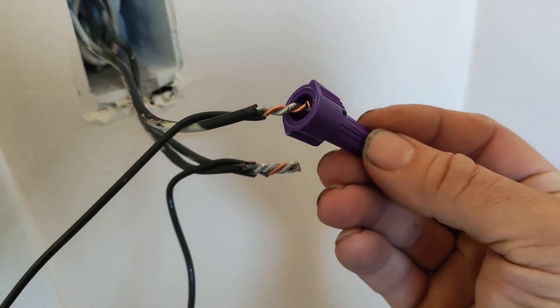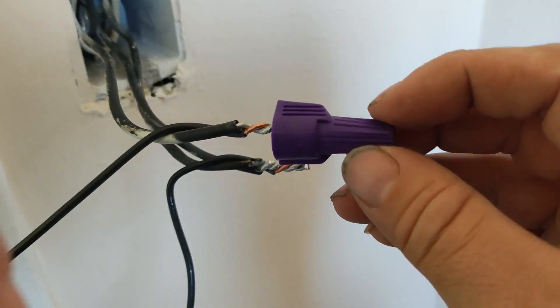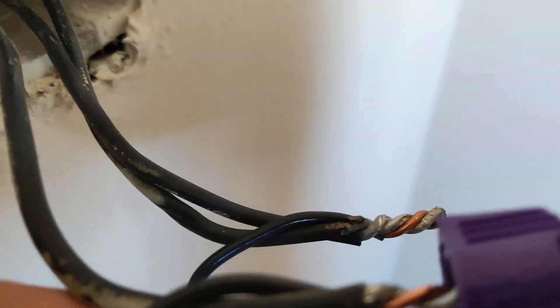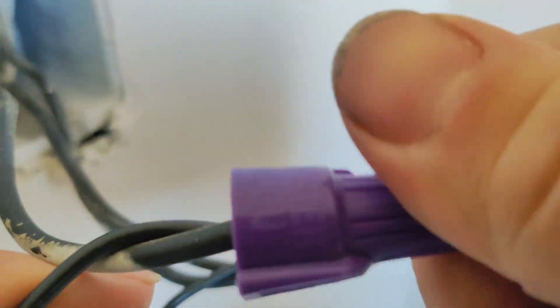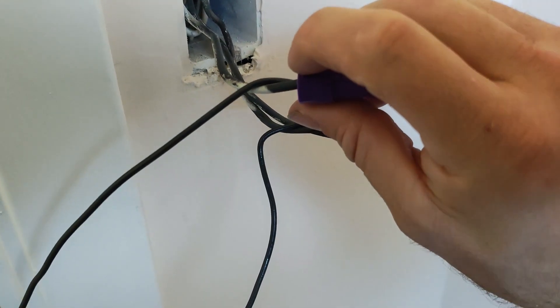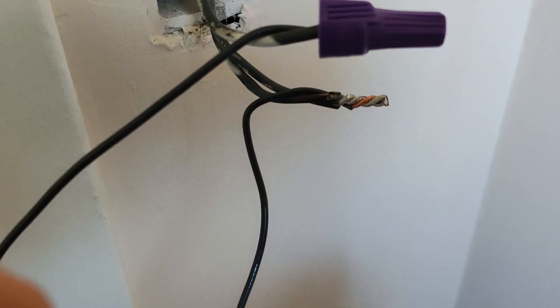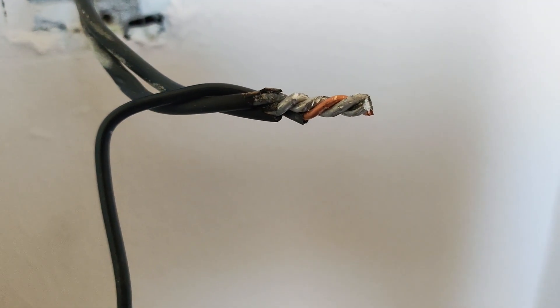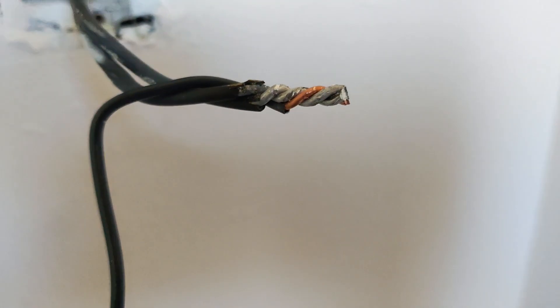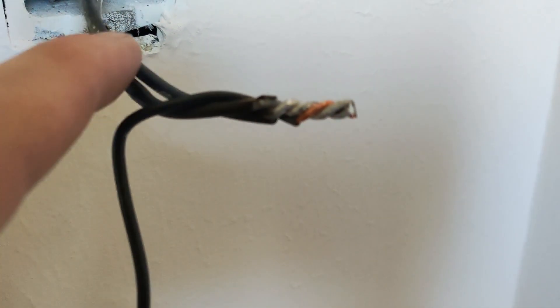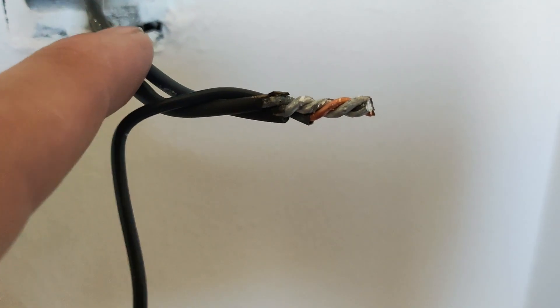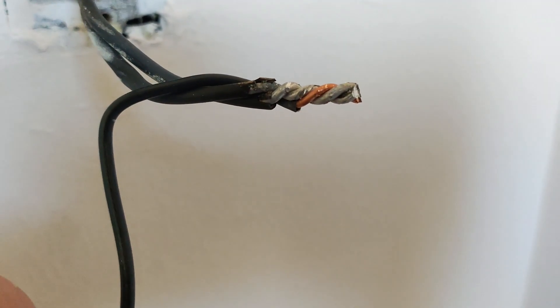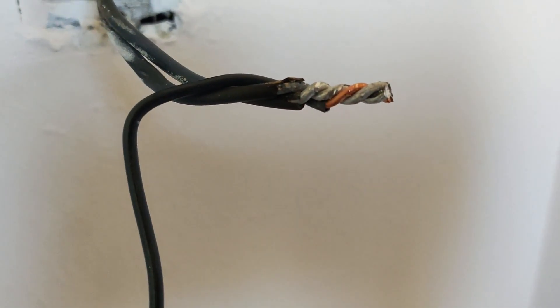So we're going to go ahead and just twist this on there. You'll notice that I'm going from 12 gauge aluminum to 14 gauge copper. The reason for that is that aluminum wiring can actually carry less current than copper wiring. So 12 gauge aluminum is only rated for 15 amps. 14 gauge copper is rated for 15 amps. 12 gauge copper is rated for 20.